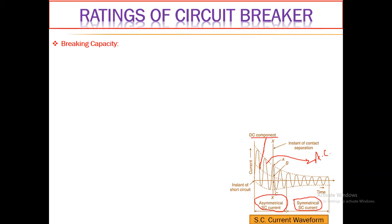The short circuit current waveform gives information related to different capacities when performing the short circuit test on a circuit breaker — symmetrical breaking capacity, making capacity, and so on. Breaking capacity determines the capacity of the circuit breaker to break the circuit when a fault takes place. It has two forms: asymmetrical breaking capacity and symmetrical breaking capacity.